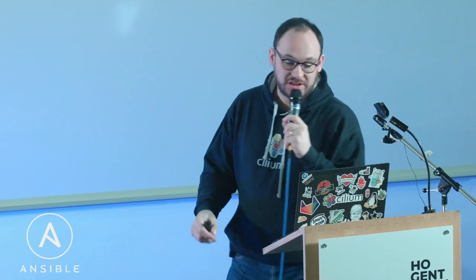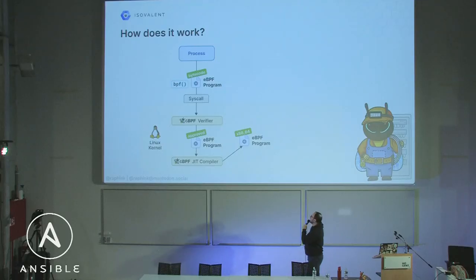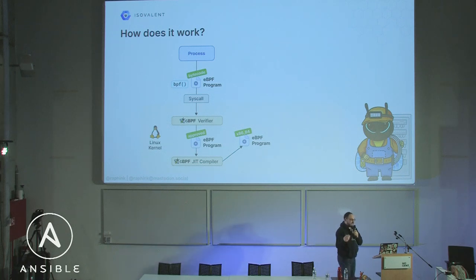Once the program has been approved, it can be compiled using a JIT compiler to native machine code on your system. So it becomes essentially just as performant as the kernel itself — it runs in a virtual machine in the kernel. You can attach it to different events: syscalls, events linked to networking interfaces, drivers, and many other things. When these events happen, your program is triggered, and you can decide what to do.